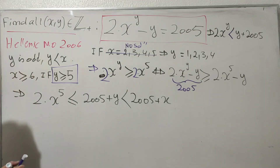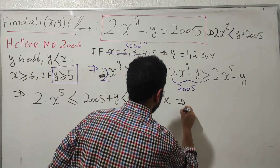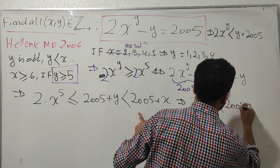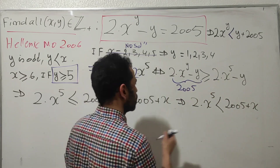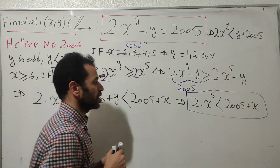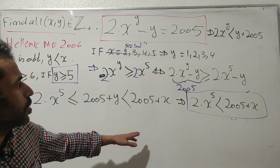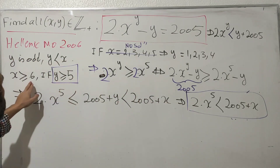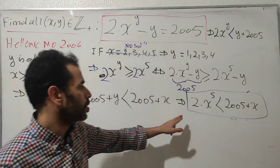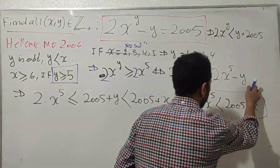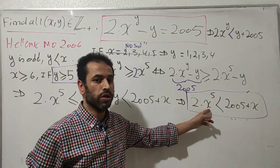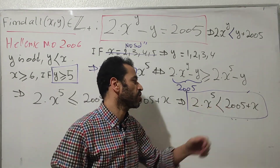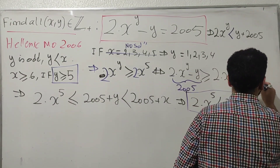So we arrive at the inequality 2·x^5 < 2005 + x. This was built on the condition that x ≥ 6 and y ≥ 5. But this inequality does not hold for x ≥ 6 — for example, at x = 6 the left-hand side is already bigger than the right-hand side. So the inequality fails, meaning our assumption y ≥ 5 is contradicted.